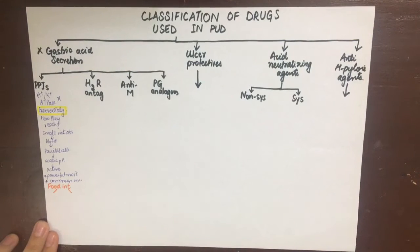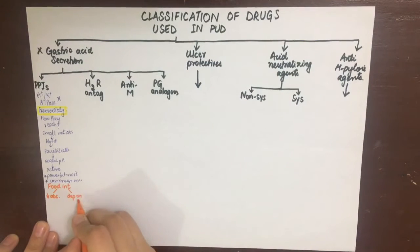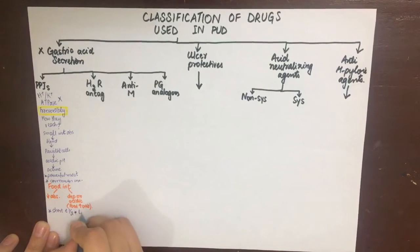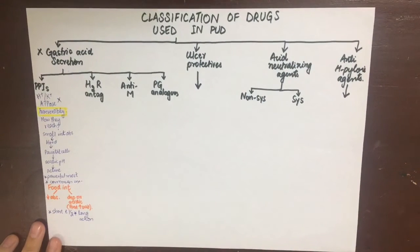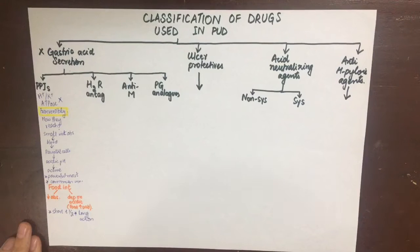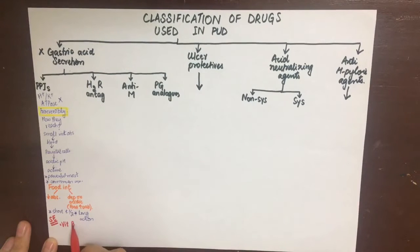Food will decrease the absorption of proton pump inhibitors, so they need to be administered 30 minutes before food, because food will increase acid secretion and thus the active form of the drug will be in high concentration when it diffuses from the blood into the parietal cells. They have a short half-life and a long duration of action because they are non-competitive irreversible antagonists. They are highly bound to plasma proteins and are used in all forms of peptic ulcers, they decrease the risk of aspiration pneumonia, they are used in Zollinger-Ellison syndrome due to hypergastrinemia, and they are the drug of choice for gastroesophageal reflux disease.